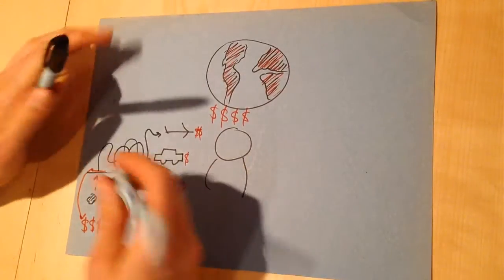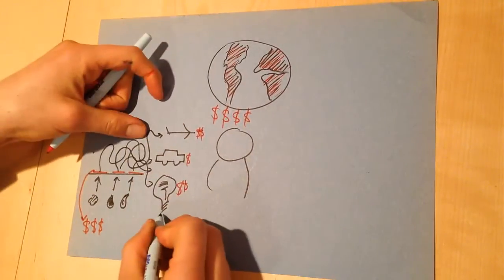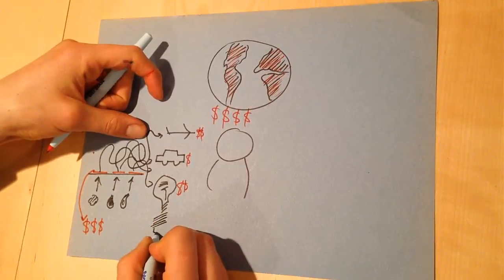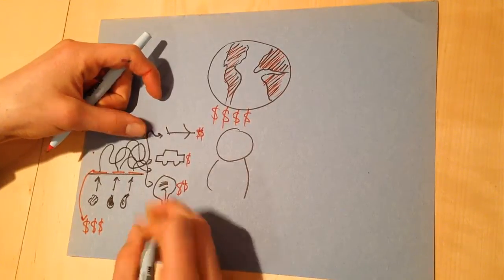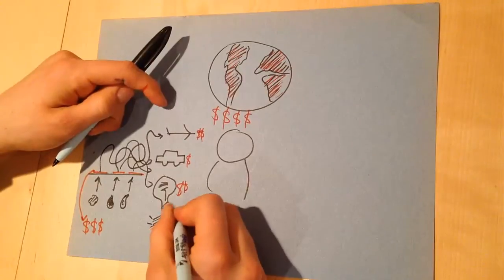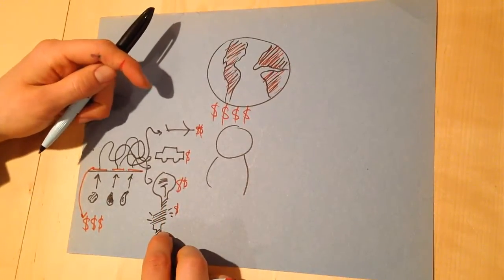And suddenly, some products will cost more, and some products like maybe more efficient light bulbs, for instance, will cost a lot less without any need for subsidies. They'll just naturally be cheaper.